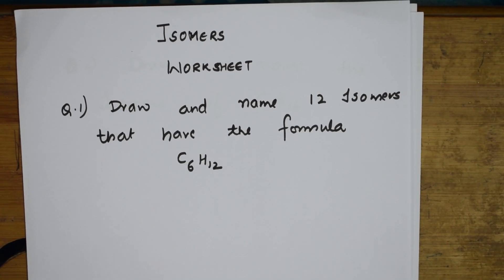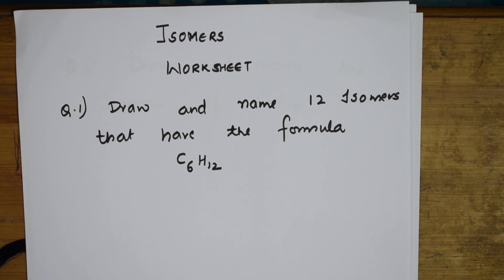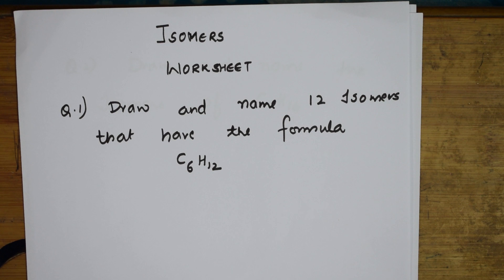Welcome back students to one more session on your isomerism concept. In the previous video I've done the bond line structure, the condensed structure, and the skeletal structure of alkanes. I've done the straight chain structure for alkanes and condensed, bond line, as well as skeletal structures. Now we'll be doing this worksheet.